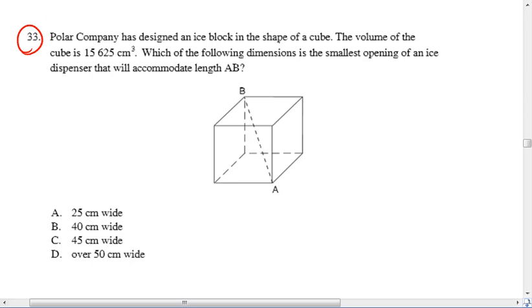Polar Company has designed an ice block in the shape of a cube. The volume of the cube is 15,625 centimeters cubed. The question is asking us which of the following dimensions is the smallest opening of an ice dispenser that will accommodate length AB, this diagonal across the cube. You can see it's going from corner to corner there.